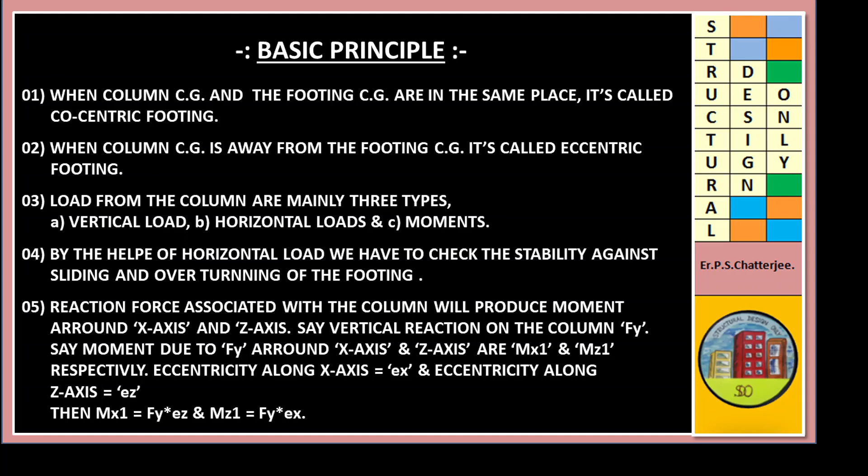Reaction force associated with the column will produce moments around X-axis and Z-axis. Say vertical reaction on the column FY. Say moment due to FY around X-axis and Z-axis are MX1 and MZ1 respectively. Eccentricity along X-axis EX and eccentricity along Z-axis EZ. Then MX1 equals FY times EZ, and MZ1 equals FY times EX.